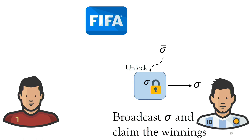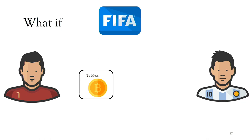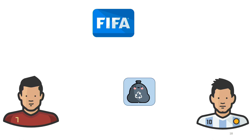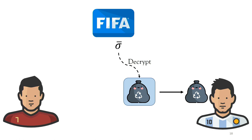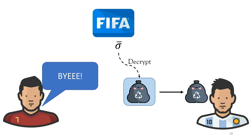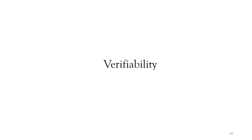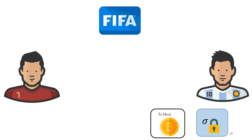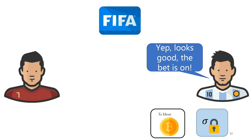Now let's see what can go wrong. First, Ronaldo could send some garbage value instead of the encrypted signature — since it's encrypted, Messi has no way to tell if it's a valid signature. When Messi later tries to decrypt using the attestation, he might receive garbage, and at that point the outcome has already happened and Ronaldo can just leave. To prevent this, we need the property called verifiability: given just the transaction and the locked signature, Messi can verify that the encrypted signature is valid.